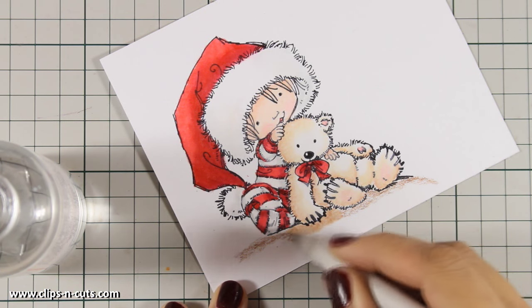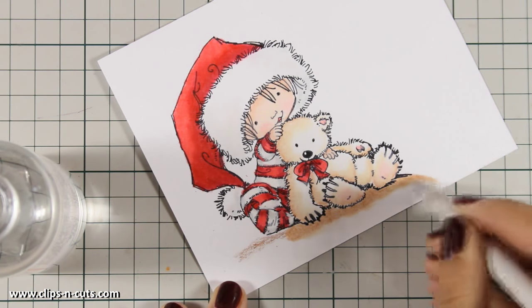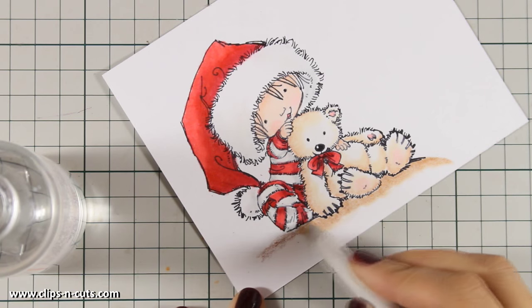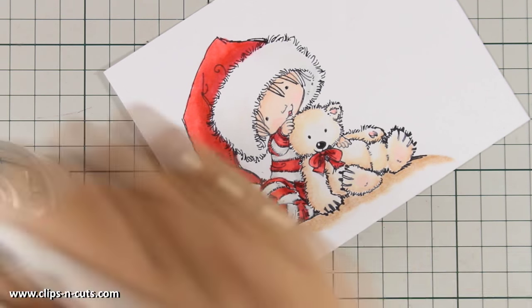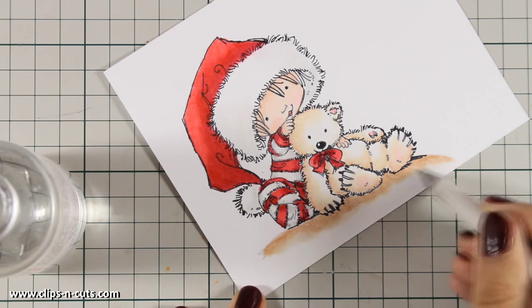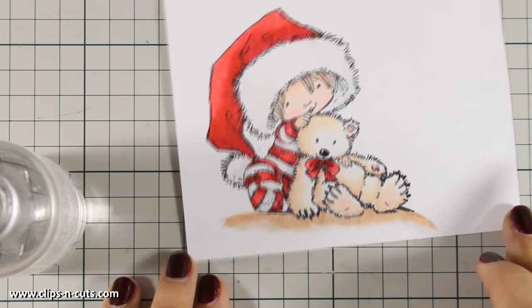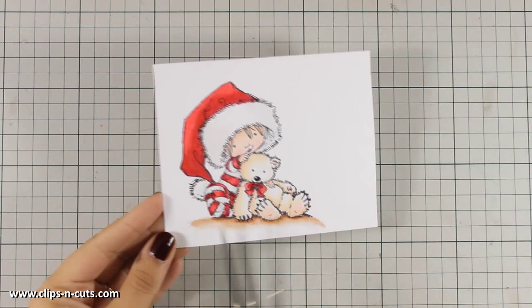I really love coloring my images with prismacolor pencils because I think that they are easy to use and I find this very relaxing. Now that I have the ground there I am going to use my scissors and go all around the image to cut it out.